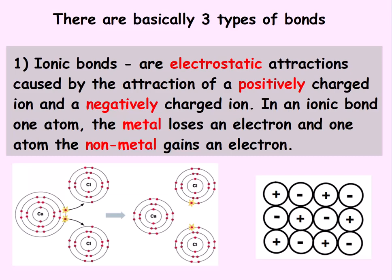The first type is ionic bonds. Ionic bonds are electrostatic attractions caused by the attraction of a positively charged ion and a negatively charged ion. In an ionic bond, the metal loses an electron and the non-metal gains an electron. Electrons are transferred.